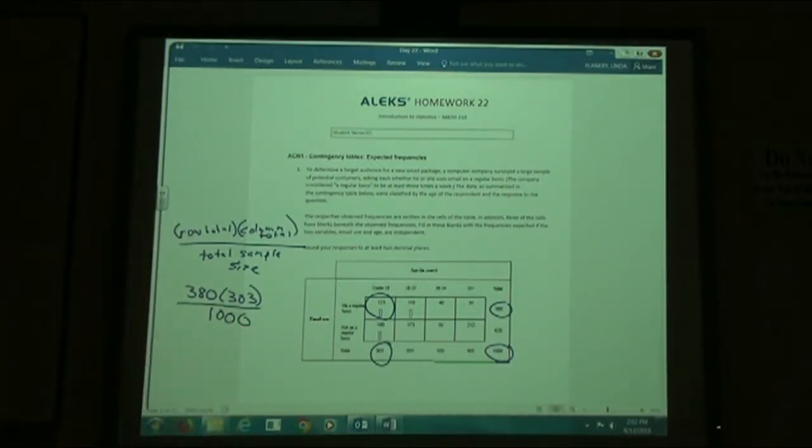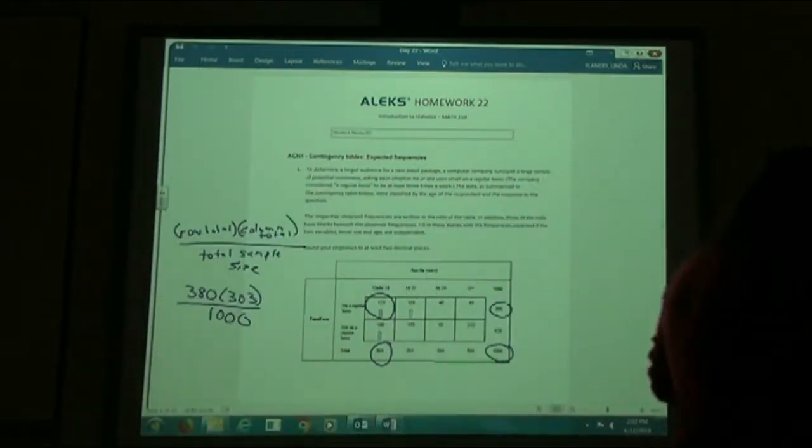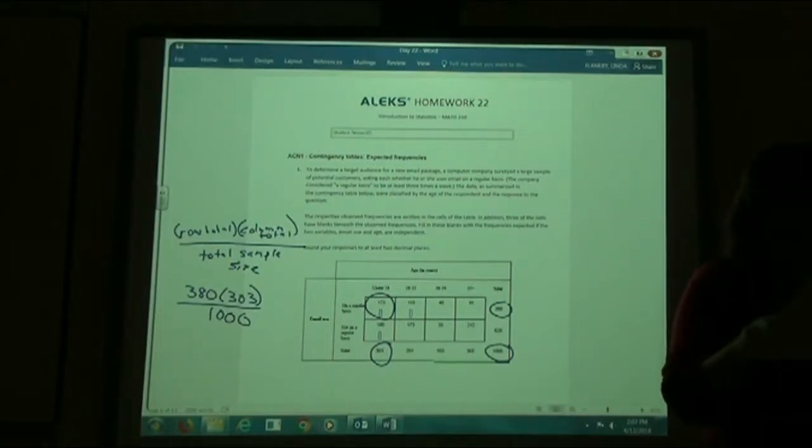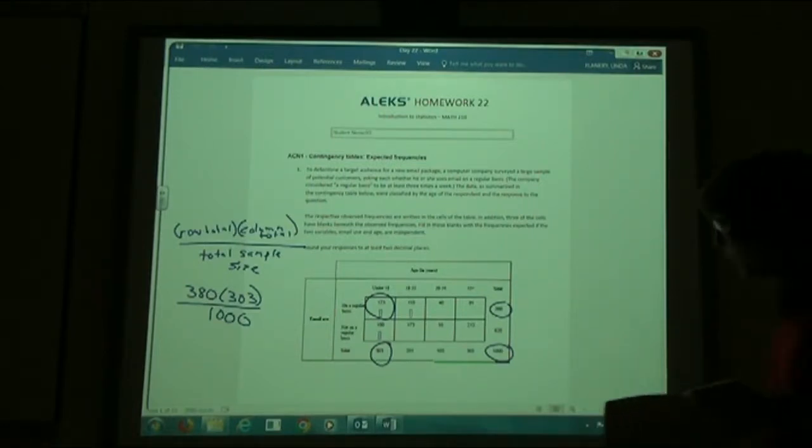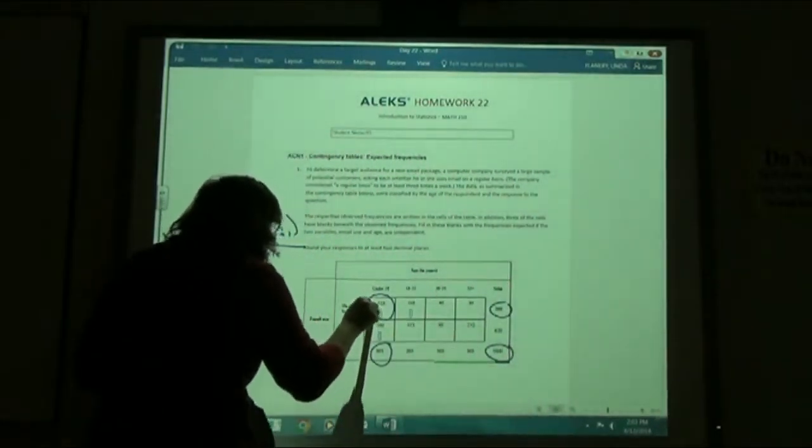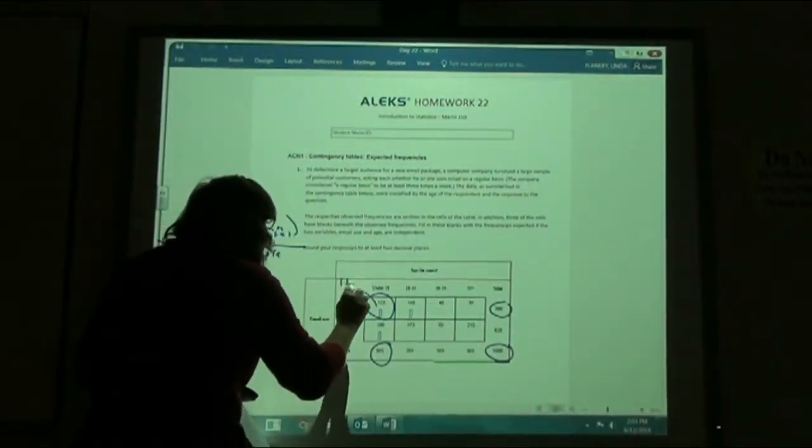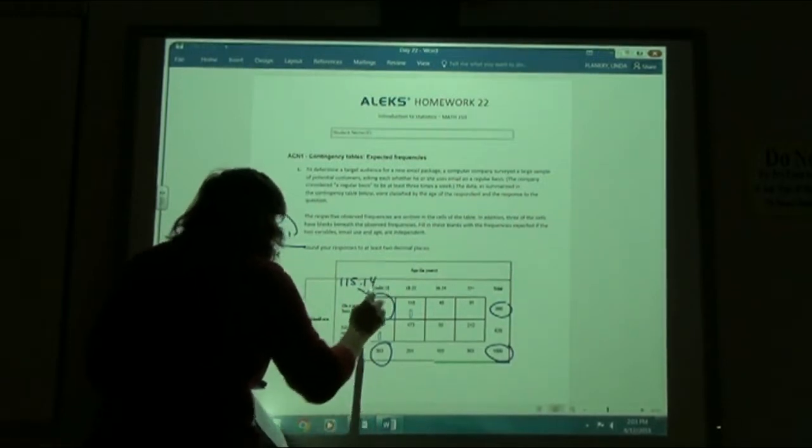So 380 times 303, I'm going to divide it by the total of the sample, which is the thousand down there in the corner. And again, you're just going to grab your calculator, take 380 times 303, divide it by a thousand. Gives you 115.14. So my answer there, 115.14.